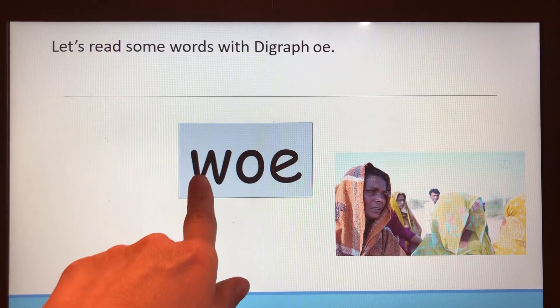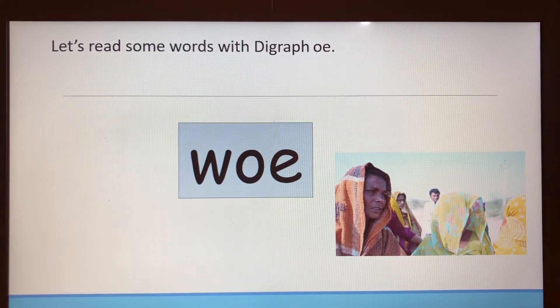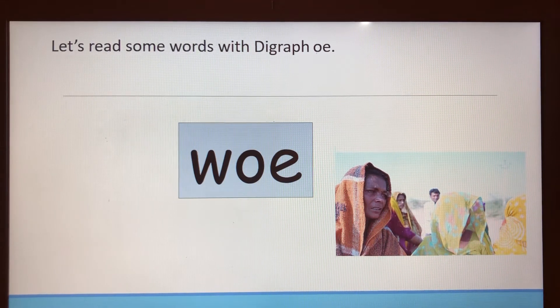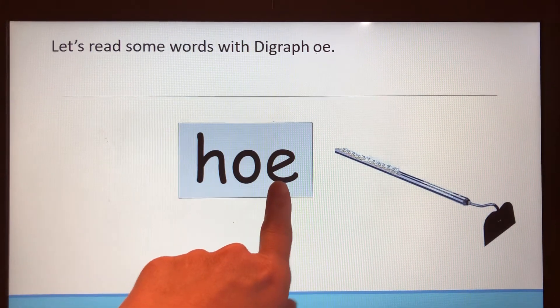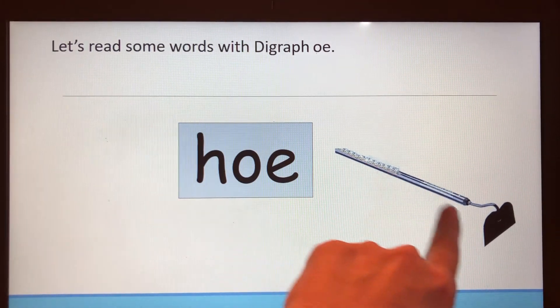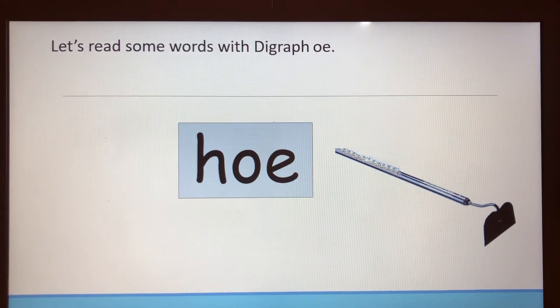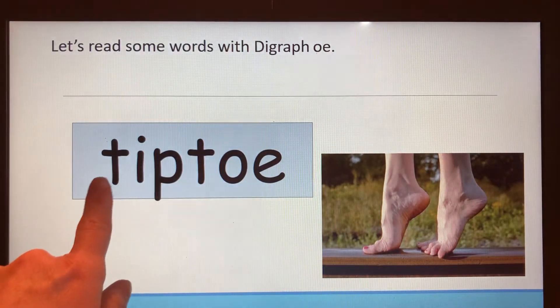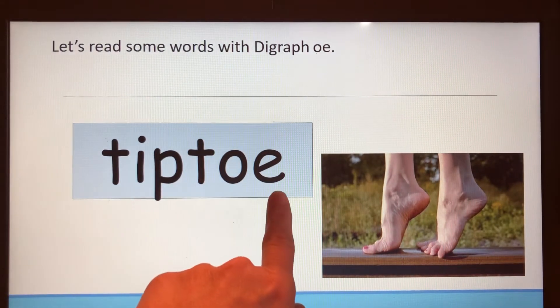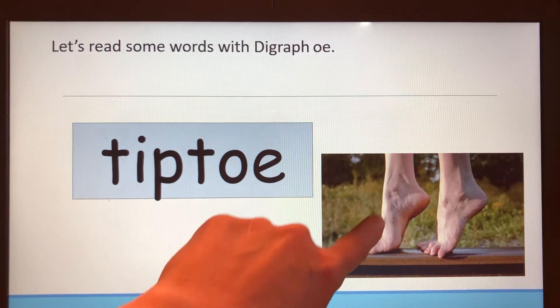This is the word woe. Woe means strife or hard times. This is the word hoe. A hoe is a garden tool. You may have seen one of these or used it to dig in the dirt. And this is the word tiptoe, and so you can see a picture of someone walking on their tiptoes.